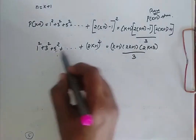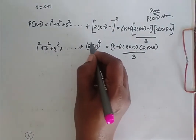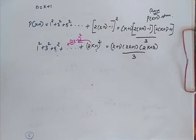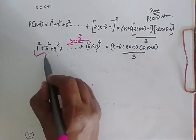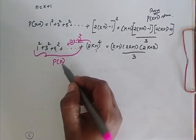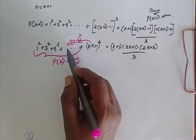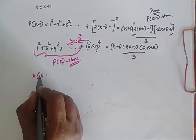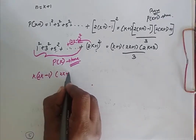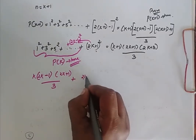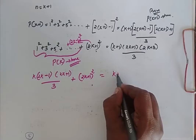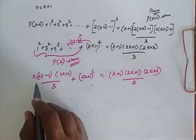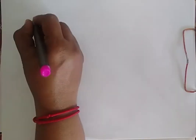Now when I look at this series, the term that comes before 2K plus 1 squared is 2K minus 1, the whole square, which is my P of K. So already I have proved that my P of K is true. So I am going to substitute the value for this here. So I will be having K into 2K minus 1 into 2K plus 1 by 3, plus 2K plus 1 squared. Now I am going to take LCM and simplify this.